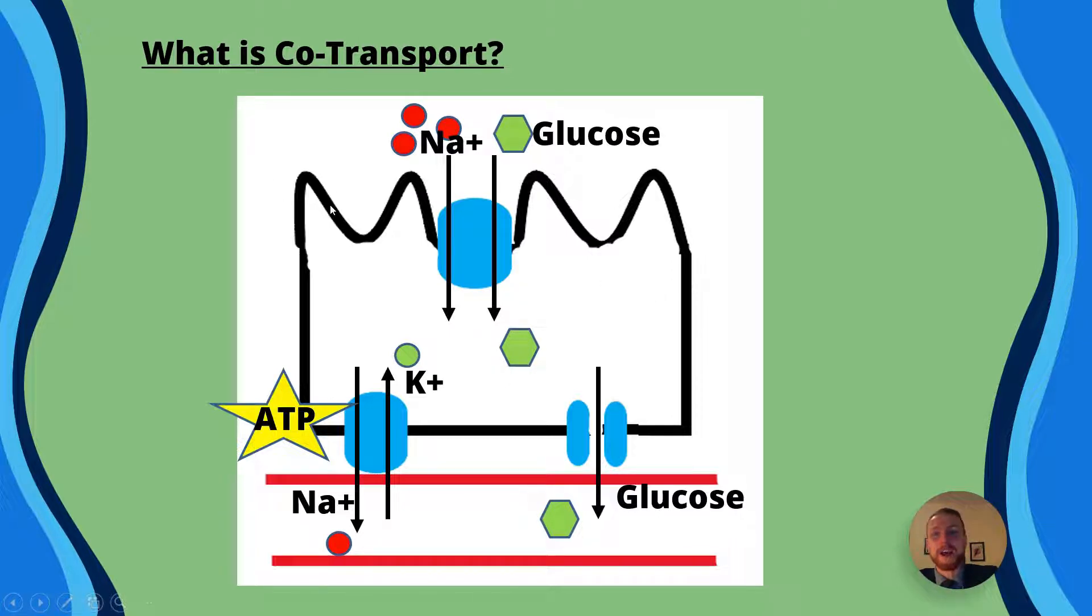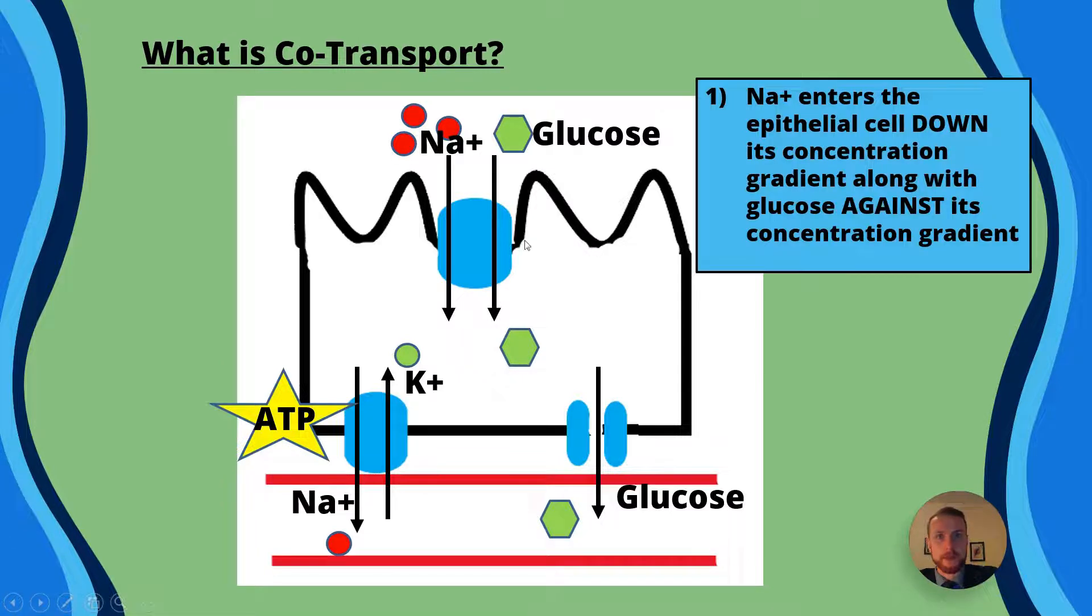So at the top we can see we've got microvilli, now they're going to increase the surface area for absorption and we've got sodium going from a high concentration to a low concentration, pretty straightforward stuff. That's going to bring glucose with it against its concentration gradient, so in your notes when you're writing this up make sure you say sodium ions enter the epithelial cell down the concentration gradient but glucose moves against its concentration gradient.